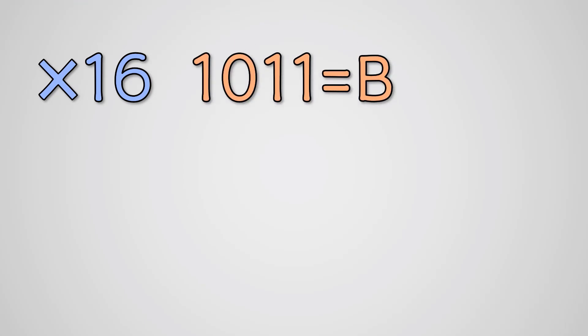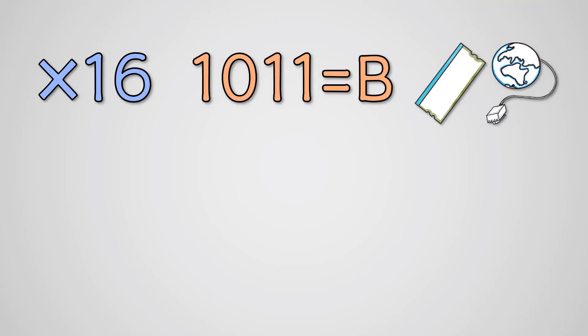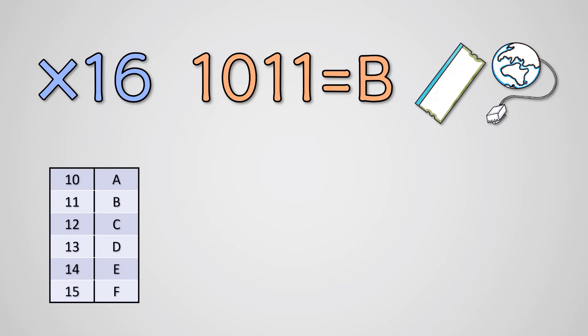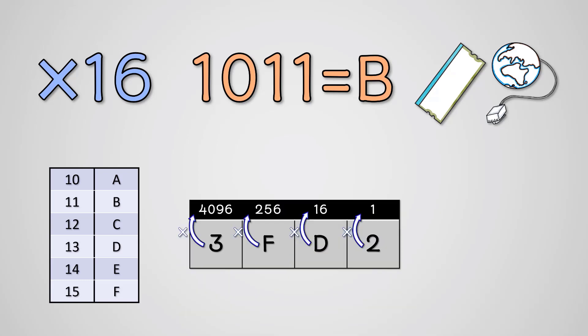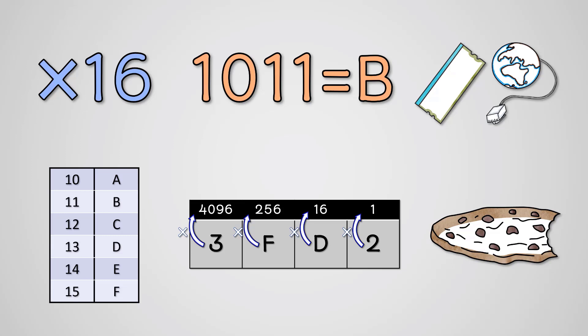So, hex notation involves columns that are multiples of 16. Hex is used to make long binary sequences easier to read, and is used in many areas of computing such as IPv6 addresses and memory addressing. The numbers 10 to 15 are represented by the letters A to F in hex. To convert between decimal and hex, we work out how many times the column number fits into our number. Converting to and from binary involves treating each column as a nibble.